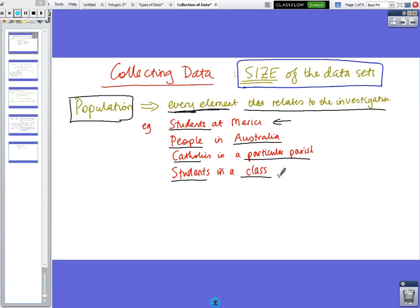But normally they're big numbers, like 30 kids is not really a population per se, but it's every element that relates to the investigation. So if the investigation relates to a class, then that's the population.